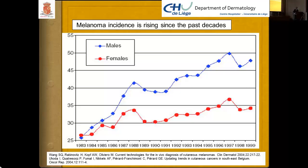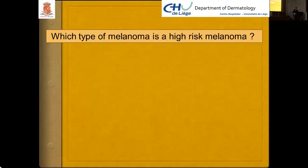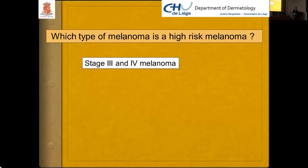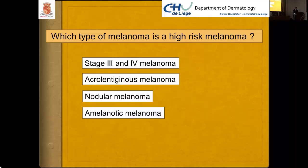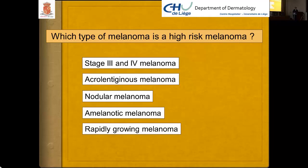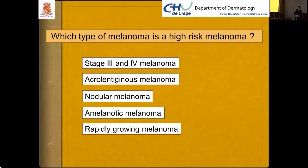High-risk melanomas include stage 3 and stage 4, acral lentiginous melanoma, nodular melanoma, and amelanotic melanoma — the latter being the nightmare of every dermatologist because it resembles normal skin. We are also increasingly detecting rapidly growing melanoma, which grows in about 3 to 4 months, has a high proliferation rate, and a very high rate of nodal and systemic metastasis.